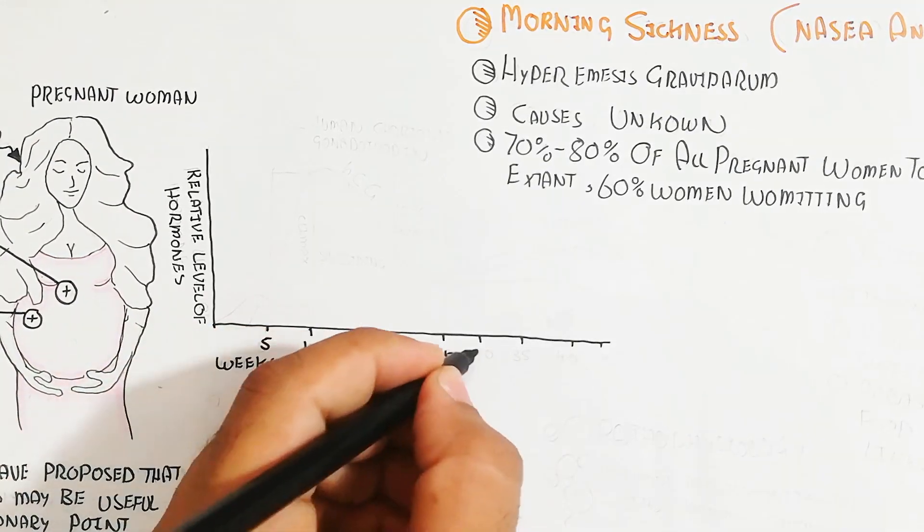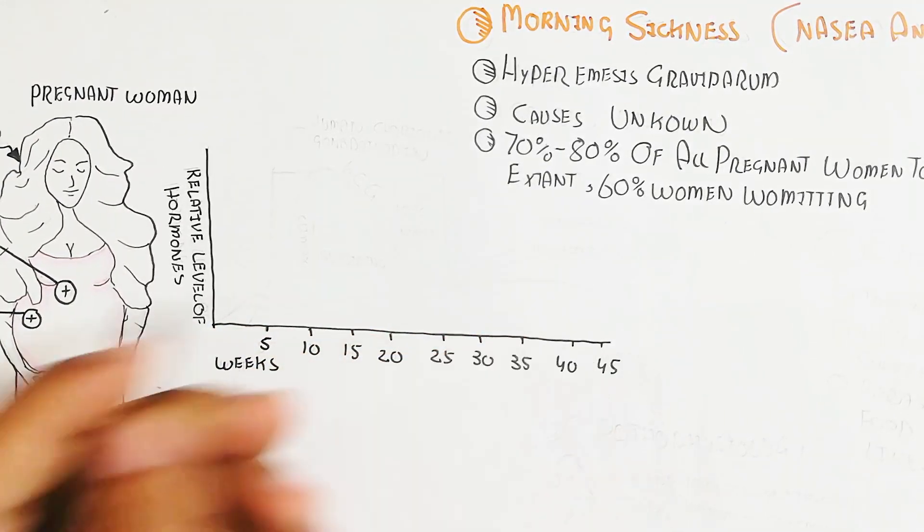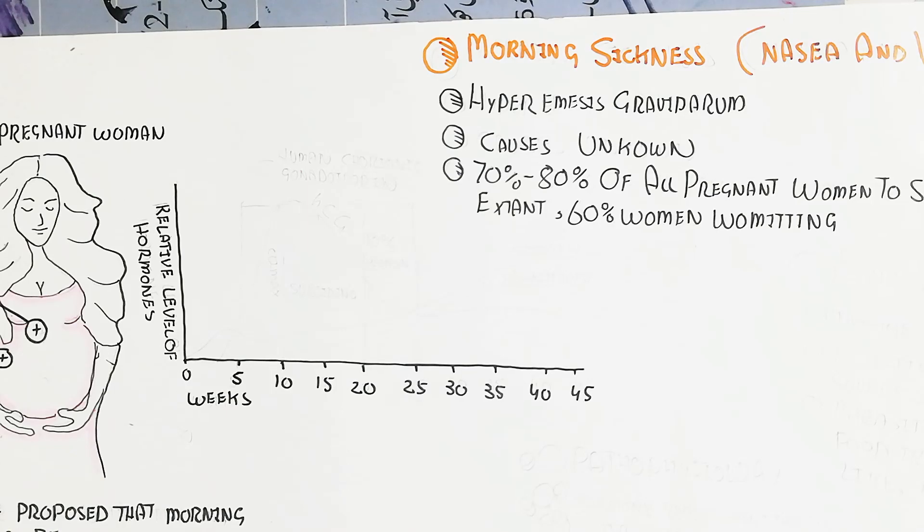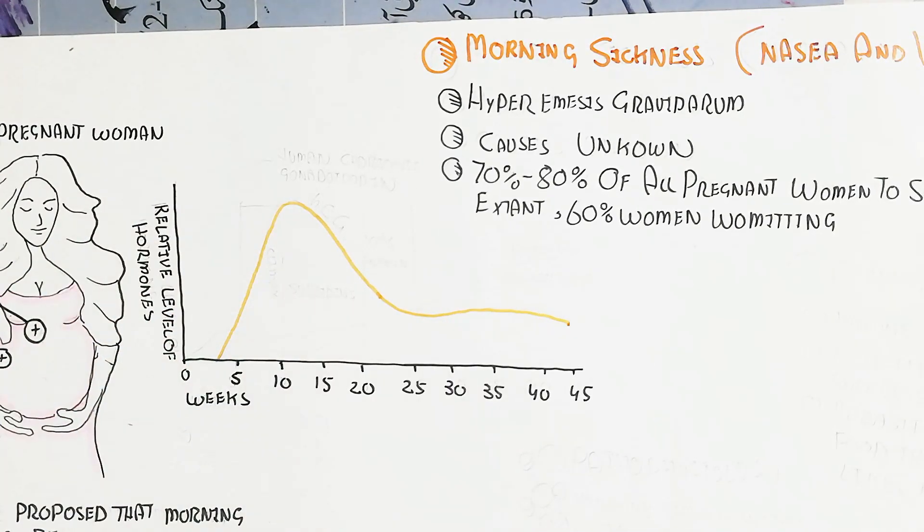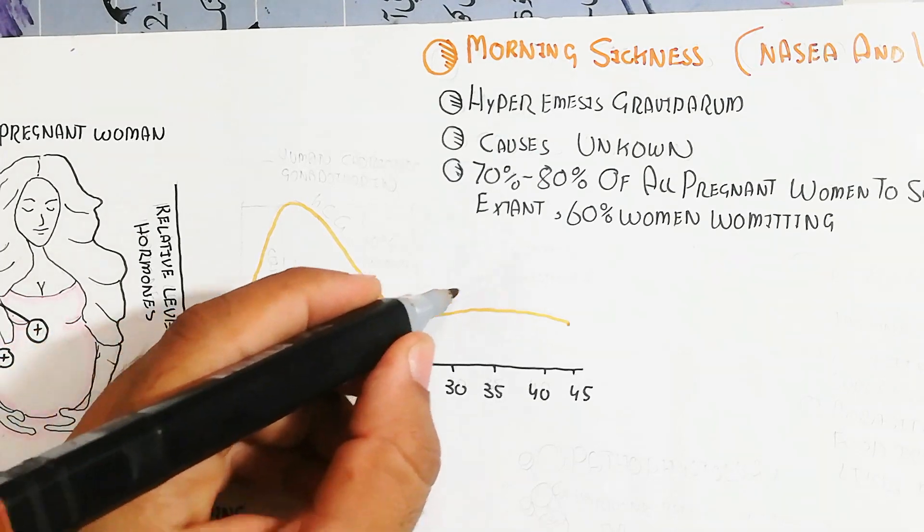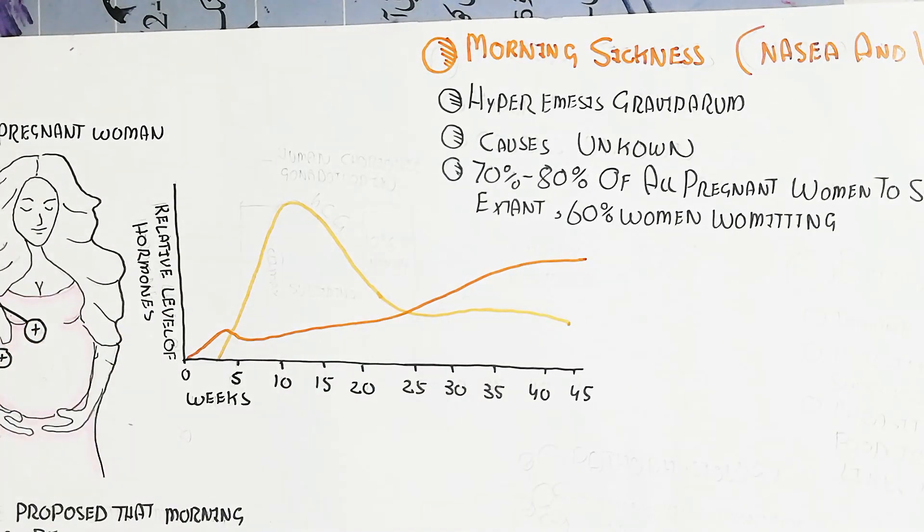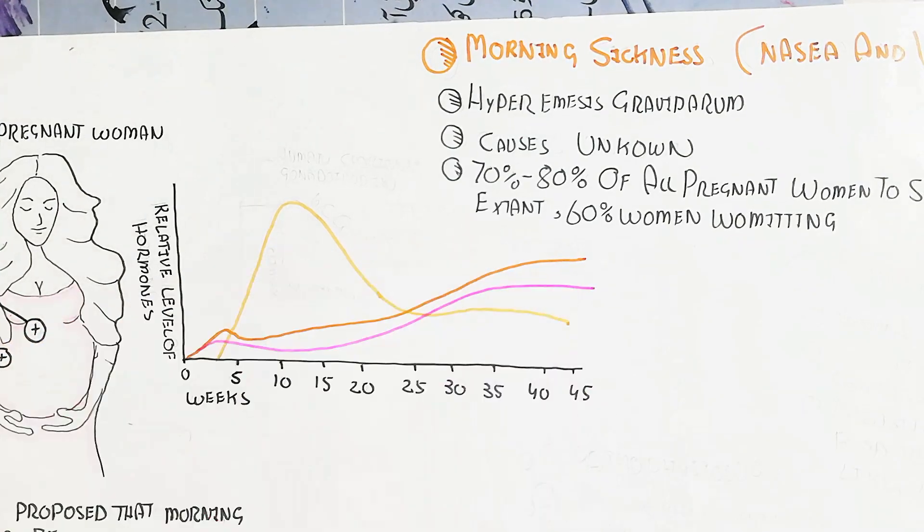Week 5 to 45 weeks during pregnancy show changes of the hormone. From the beginning of the first five weeks, human chorionic gonadotropin (HCG) will release from the fetus.